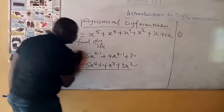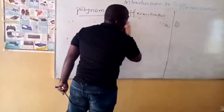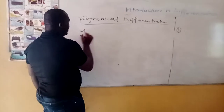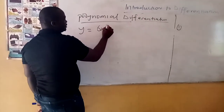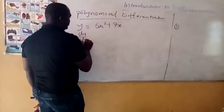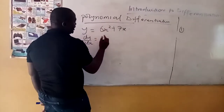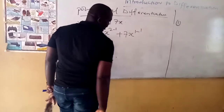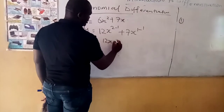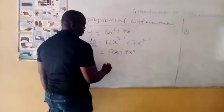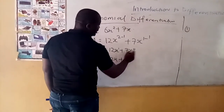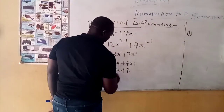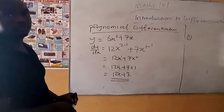Let me run one more example on polynomial differentiation. In the next video it will be function of a function, logarithmic differentiation, and implicit-explicit differentiation. If y is equal to 6x squared plus 7x, find dy over dx. You apply the power rule to each term: 2 times 6 gives 12x to the power 1, plus 1 times 7 gives 7x to the power 0, which is 1. So dy over dx equals 12x plus 7.